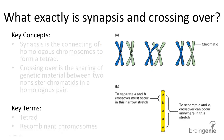During meiosis, synapsis and crossing over occur between two chromosomes in a homologous pair. From an evolutionary standpoint, by exchanging genetic information between the mother and father chromosome, there's an advantage of increasing variability within the gametes produced from meiotic division.